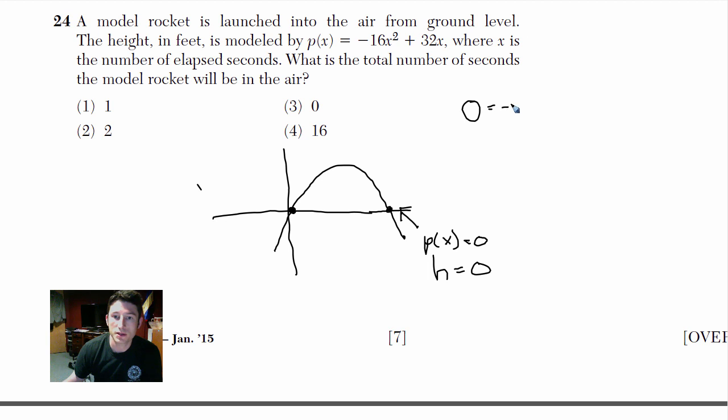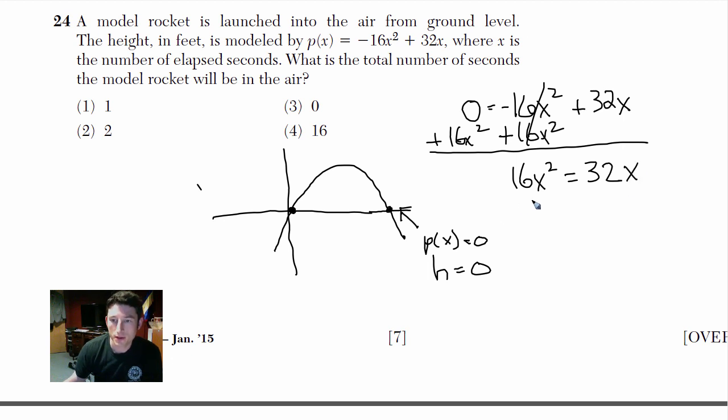So zero equals negative 16X squared plus 32X. We'll move this over, add 16X squared to both sides. Alright, so I'll just move this over a little bit. 16X squared equals 32X, divide by 16, X squared equals 2X. Sorry, 32 divided by 16 is not 32, it's 2. Divide by X, divide both sides by X, and we get X equals 2.